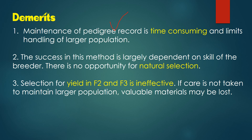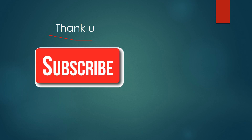The demerits of the pedigree method: documentation of all plant records is very time-consuming and limits handling of larger populations. Success in this method largely depends on the skill of the breeder. There is no opportunity for natural selection, since the breeder must have exact knowledge of the pedigree methods and charts and chooses whatever plants he needs. Also, selection for yield in F2 and F3 is very ineffective. If care is not taken to maintain a larger population, valuable material is lost, because you have to keep a keen eye over the characters being inherited — if you miss a character, that selection will be lost.